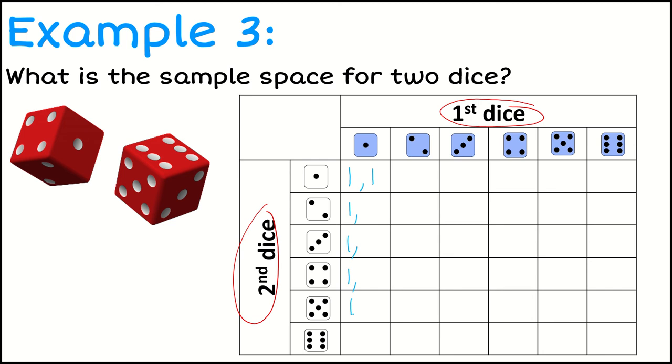If I go down that column, so I'm going to continue, all of these options here are going to continue getting a 1 on the first dice. But on the second dice, I could get a 2, a 3, a 4, a 5, or a 6.